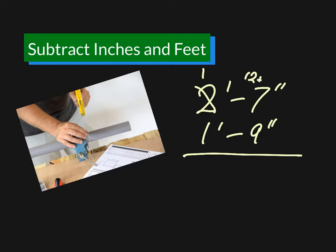So now we're subtracting 9 from 19 inches. 19 take away 9 is 10 and 1 take away 1 is 0. So 10 inches left.